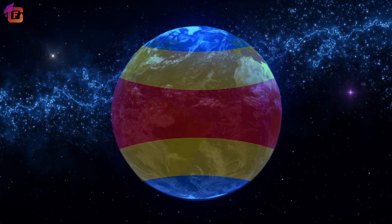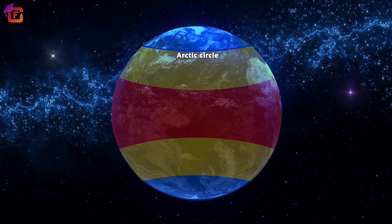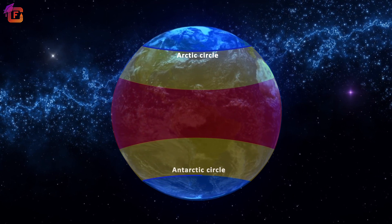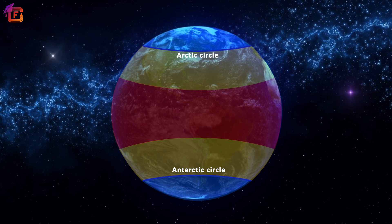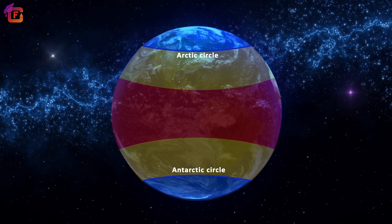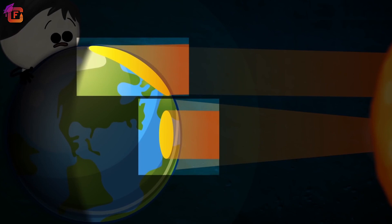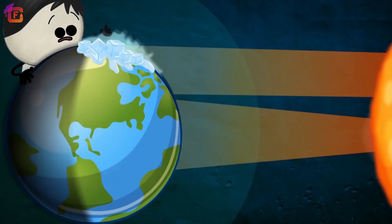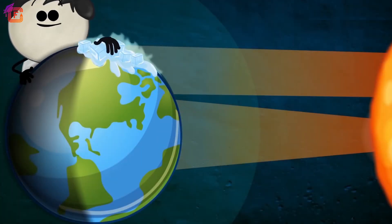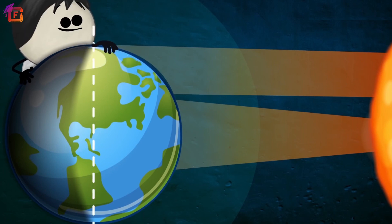Most areas of Europe, North America, Asia, and South America are in this zone. The frigid zone lies beyond the Arctic and Antarctic circles. They are the coldest zones of the earth. In these two zones, the sun never rises above the horizon. The polar regions receive minimum solar energy.